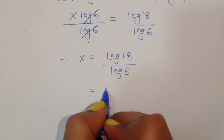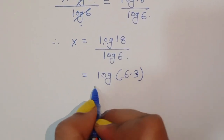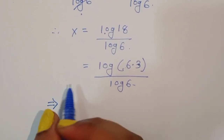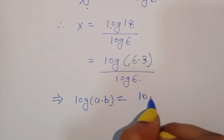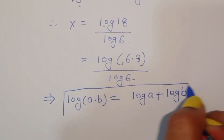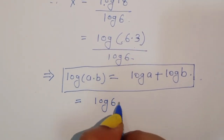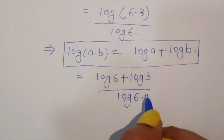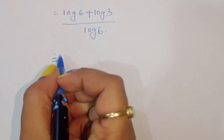Now we can expand log of 18. Since 18 equals 6 times 3, we can write log of 18 as log of 6 plus log of 3. So x equals log of 6 plus log of 3, all divided by log of 6.